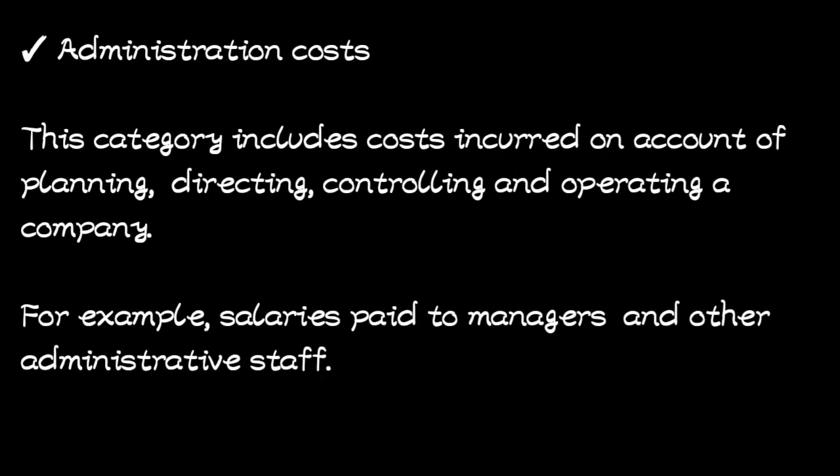The last category in classification by function is administrative costs. This category includes costs incurred on account of planning, directing, controlling, and operating a company. Examples of administrative costs include salaries paid to managers and other administrative staff. So under classification by function, we have three categories: production costs, selling and distribution costs, and administrative costs.